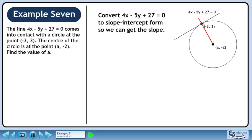Convert 4x - 5y - 27 = 0 to slope-intercept form so we can get the slope.